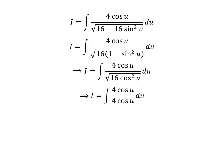Square root of 16 times square of cosine of u is equal to 4 times cosine of u. So, i is equal to integral of 4 times cosine of u upon 4 times cosine of u. Cancelling out the common factor 4 times cosine of u in the numerator and the denominator gives us i is equal to integral of 1 with respect to u.